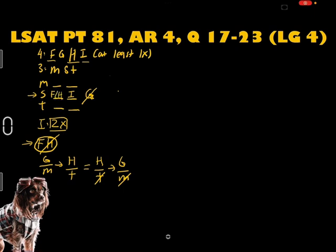Next, let's split the game board using the conditional statement and its converse. In one instance, we can have G assigned to M. In another instance, we can have G assigned to T, but not M.